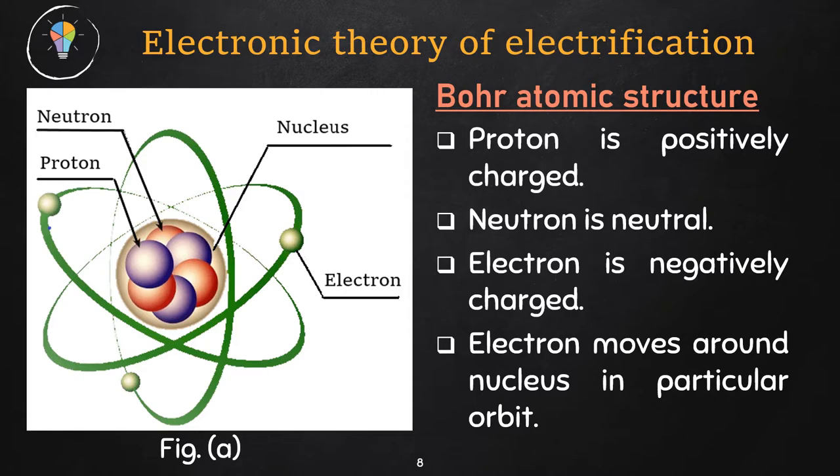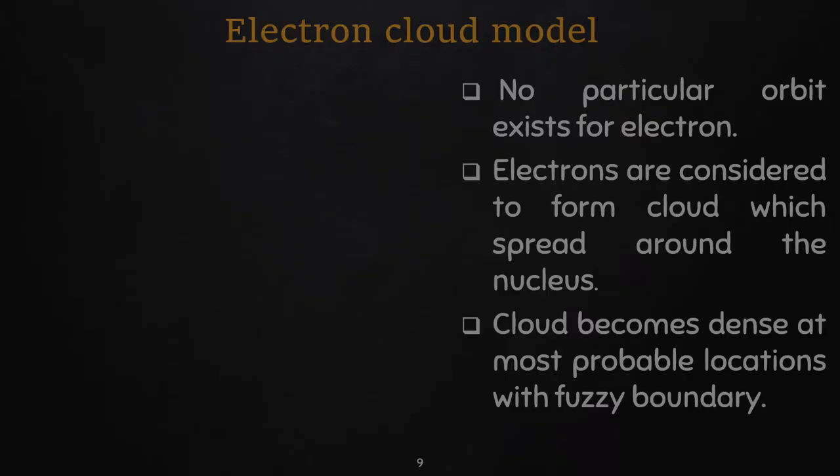A very crude model of atom can be approximated as our solar system. Just like planets have their own orbits and are located at different distances from the sun, electrons behave accordingly. This model is still popular in teaching physics as it is easier to visualize. This is shown in figure A.